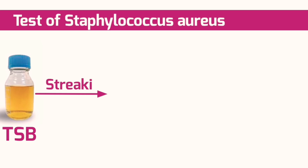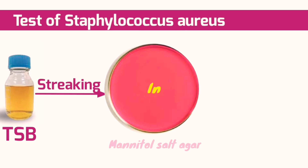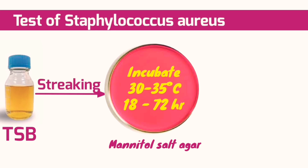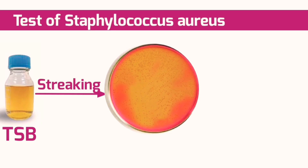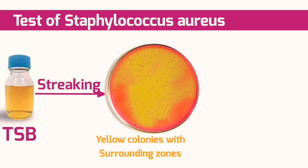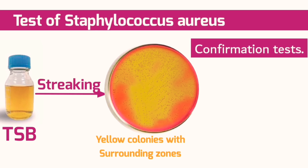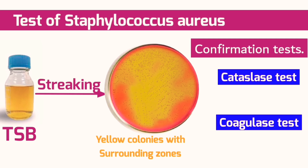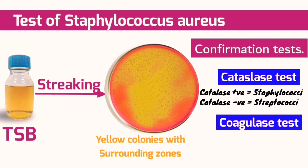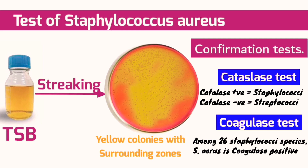To detect Staphylococcus aureus, streak directly from tryptone broth after one day of incubation onto Mannitol Salt Agar and incubate plates at 30 to 35 degrees Celsius for one to three days. Growth of yellow colonies surrounded by a yellow zone indicates the presence of Staphylococcus aureus. We can confirm its presence by performing catalase and coagulase tests. The catalase test confirms the organism is a Gram-positive Staphylococcus, since Staphylococcus is catalase positive while Streptococcus is catalase negative. Among all Staphylococcus species, Staphylococcus aureus is the only type that produces coagulase enzyme.